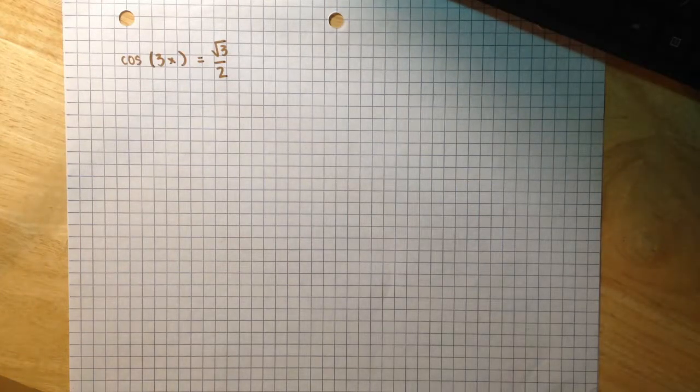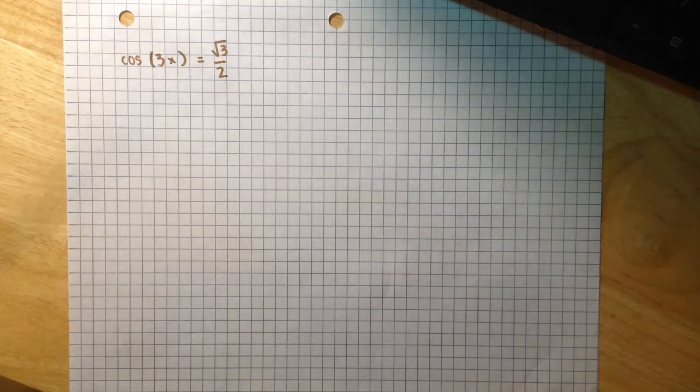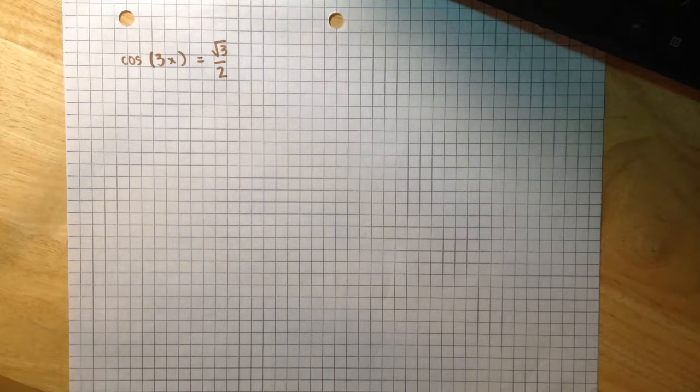We are asked to find all of the exact solutions to the following equation: cosine of 3x equals radical 3 over 2, and to use the parameter k as necessary to represent any integer, and list those solutions which are in the interval 0 to 2π.